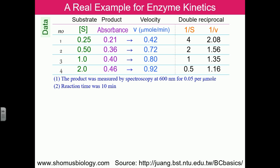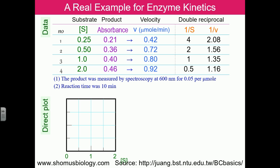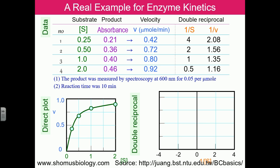All reactions are run for 10 minutes. Plotting the data gives substrate concentration on the x-axis and velocity on the y-axis, producing the same type of curve: enzyme velocity increases with substrate concentration and then levels off. The double reciprocal plot gives Vmax equal to 1 and Km equal to approximately 3.8.